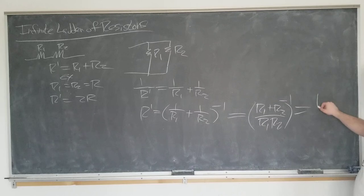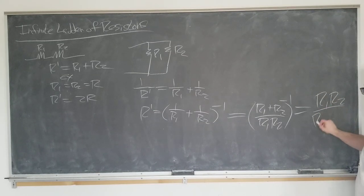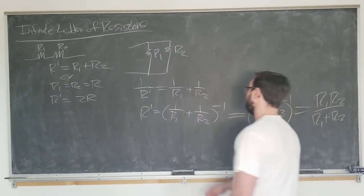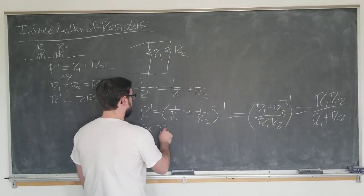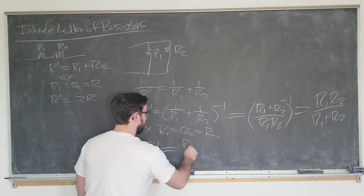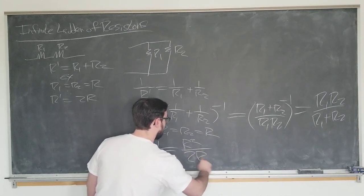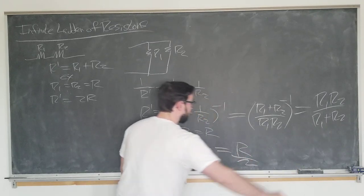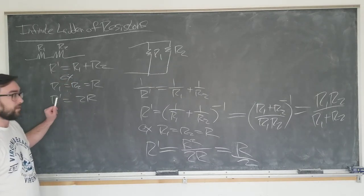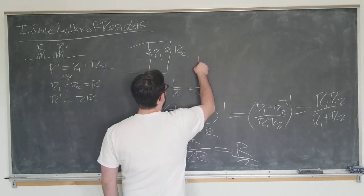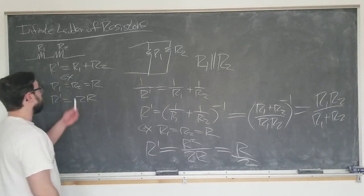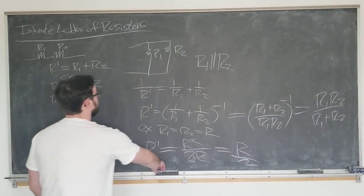And then finally reciprocating, R1 R2 over R1 plus R2, commonly known as the product over sum formula. And just an example for this, if R1 equals R2 equals R, then R' is just R squared over 2R, which is R over 2. So for the parallel combination, it's going to halve the resistance; series combination is going to double it. And we're going to be calling this configuration R1 parallel to R2 as a notation.